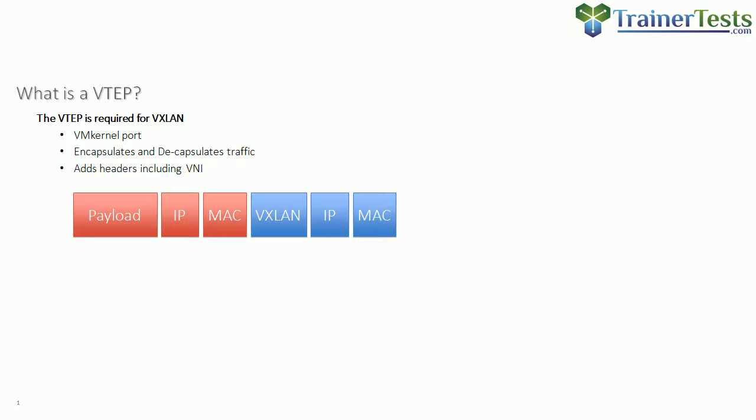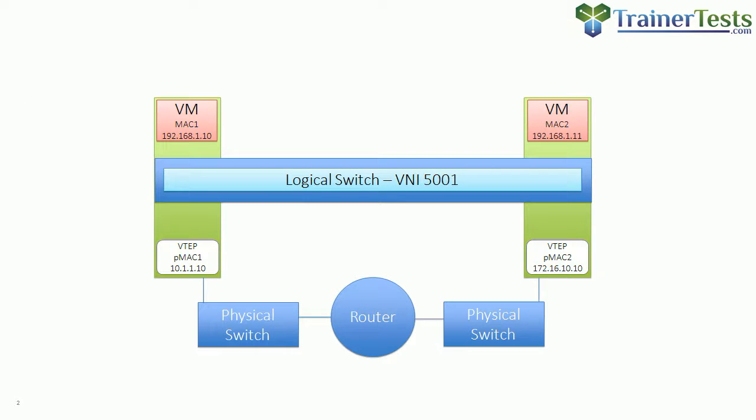With logical switching comes VTEPs. VTEPs are required for VXLAN encapsulation. The VTEP makes it possible for our layer 2 logical switch traffic to traverse a layer 3 physical network. The VTEP is responsible for encapsulating and decapsulating traffic, adding outer headers including an outer MAC, outer IP, and an outer VXLAN header that specifies the VNI.